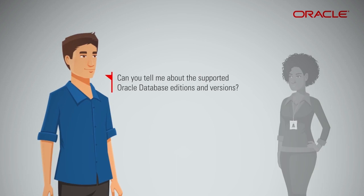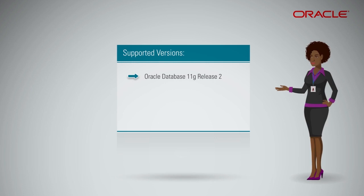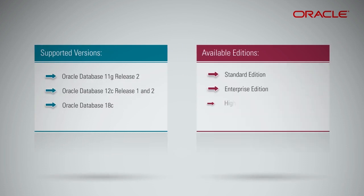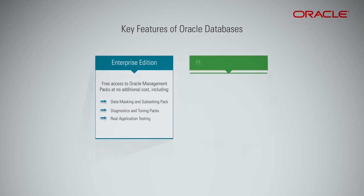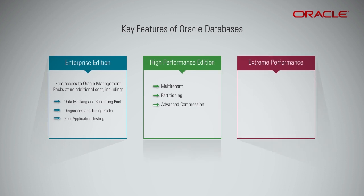Can you tell me about the supported Oracle Database editions and versions? The supported versions are Oracle Database 11G Release 2, 12C Release 1 and 2, and Oracle Database 18C, supporting different patch levels, defaulting to the latest. The available editions are Standard Edition, Enterprise Edition, High Performance Edition, and Extreme Performance Edition. Key features include free access to Oracle Management Packs with the Enterprise editions at no additional cost, including Data Masking and Subsetting Pack, Diagnostics and Tuning Packs, and Real Application Testing. The High Performance Edition extends Enterprise Edition by including options like Multi-tenant, Partitioning, and Advanced Compression. The Extreme Performance Edition includes database options like RAC, Active Data Guard, and In-Memory.